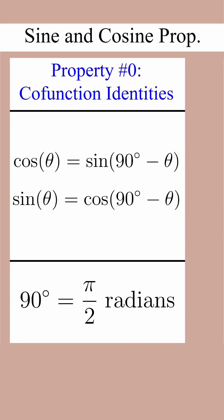Property number 0 tells us that cosine of theta is equal to sine of 90 minus theta, and sine of theta is equal to cosine of 90 minus theta, so long as theta is in degrees.